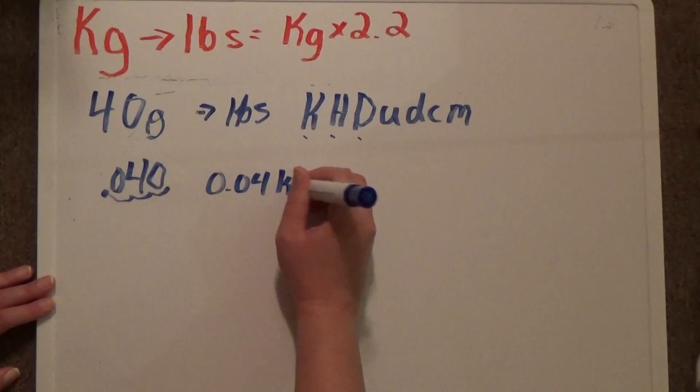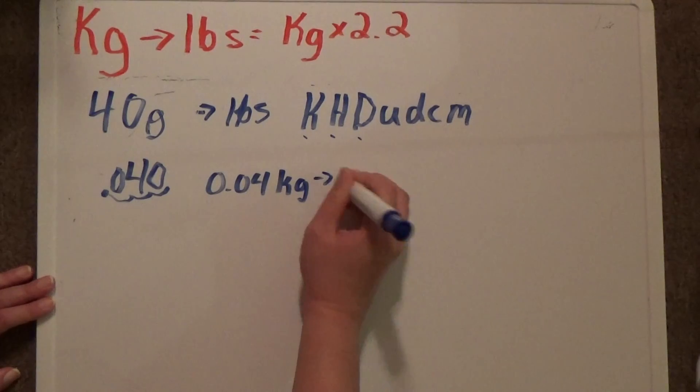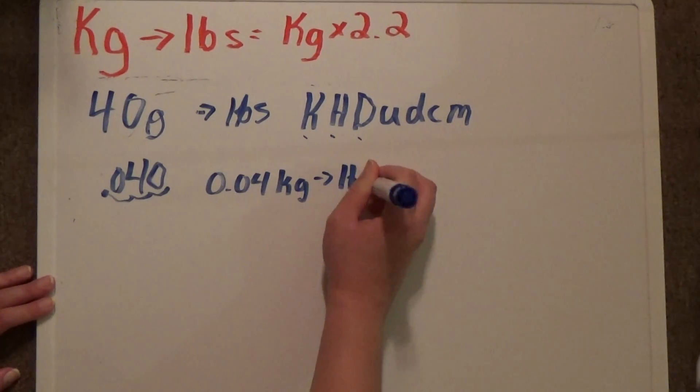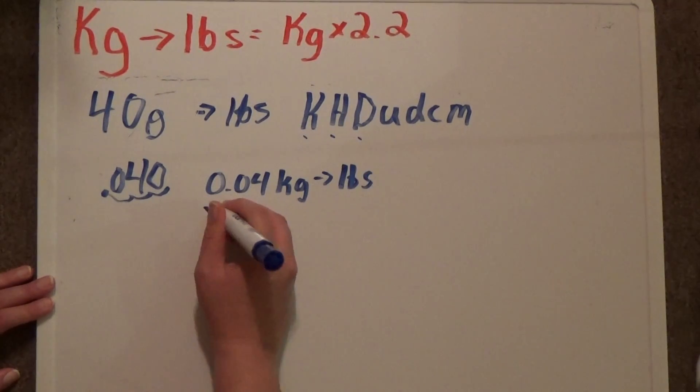So, now I need to convert 0.04 kilograms to pounds. I multiply 0.04 by 2.2.